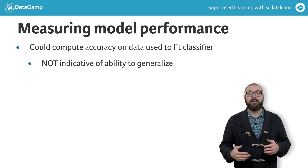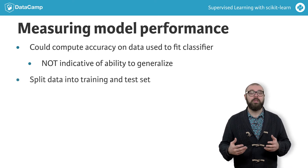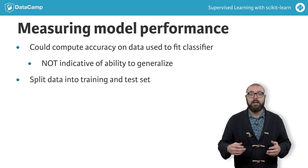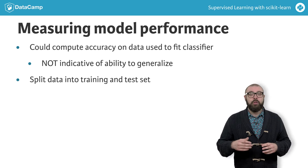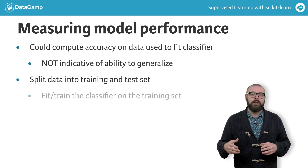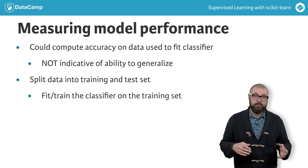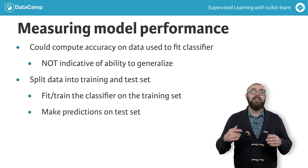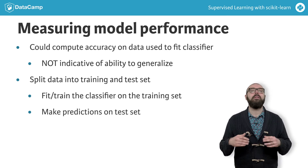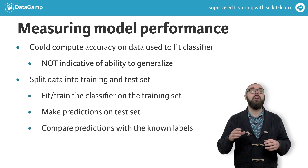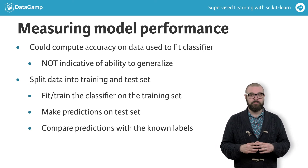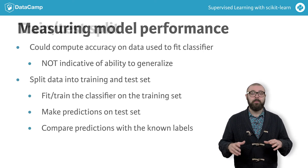For this reason, it's common practice to split your data into two sets: a training set and a test set. You train or fit the classifier on the training set, then make predictions on the labeled test set and compare these predictions with the known labels. You then compute the accuracy of your predictions.